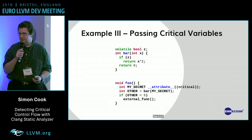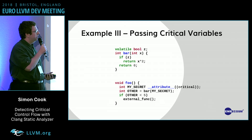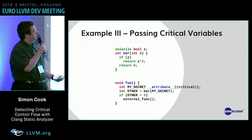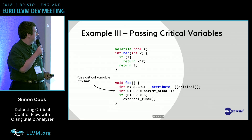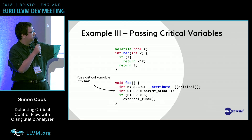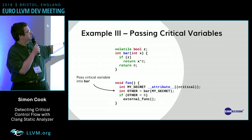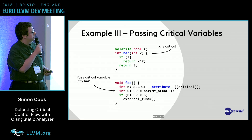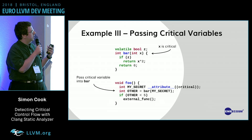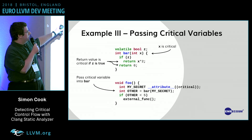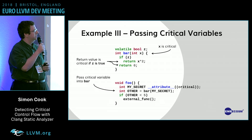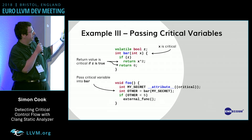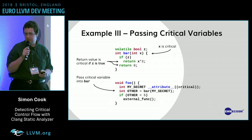Take a much more complex example, where I have a variable with this annotation, and then I pass it to another function. In this case, if I pass my secret variable into this function, the return value of this function should have this annotation dependent on whether the variable z is true or not.